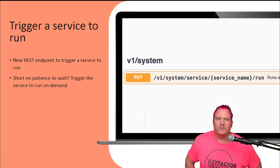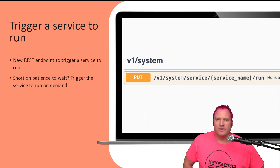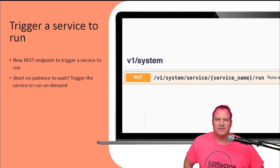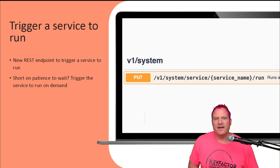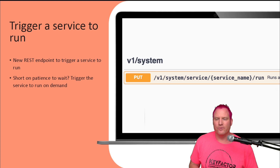Another feature we added to the REST API in Community was the ability to trigger service workers. As you know, you could configure a service in EJBCA, but you don't really ever know when that service is going to start running. Now we have a REST endpoint that you can trigger the worker whenever you need — so on demand.